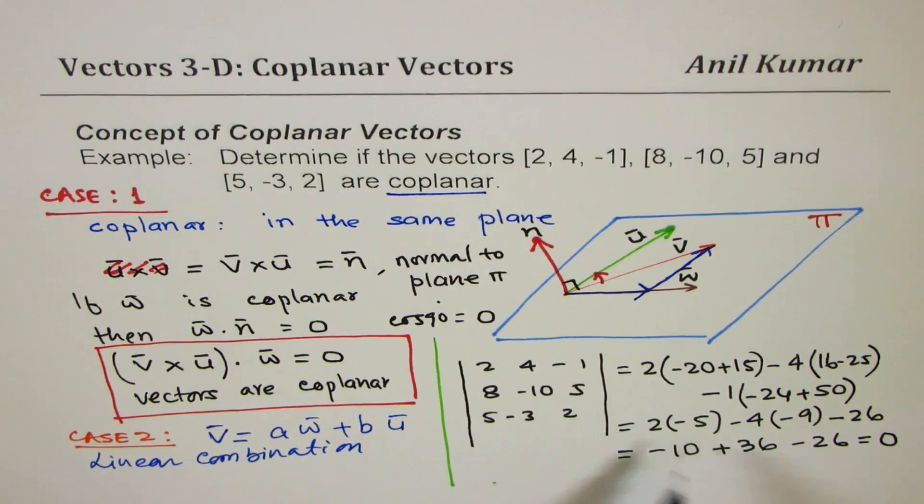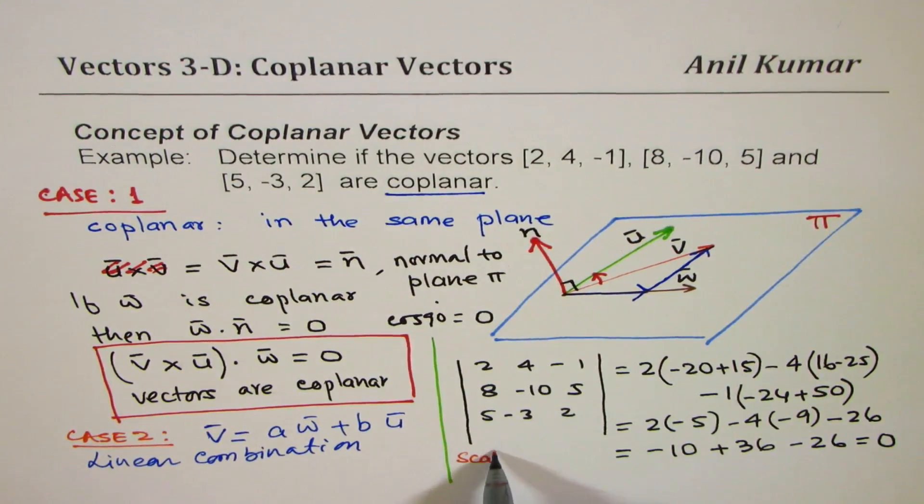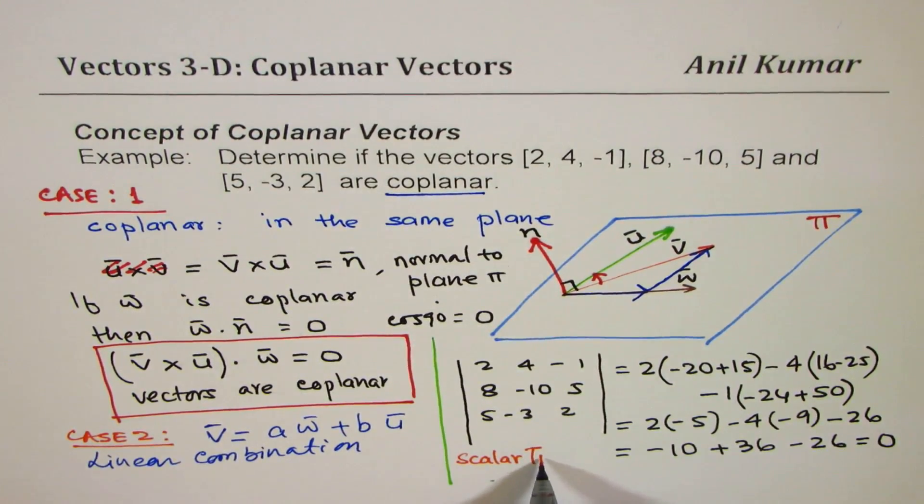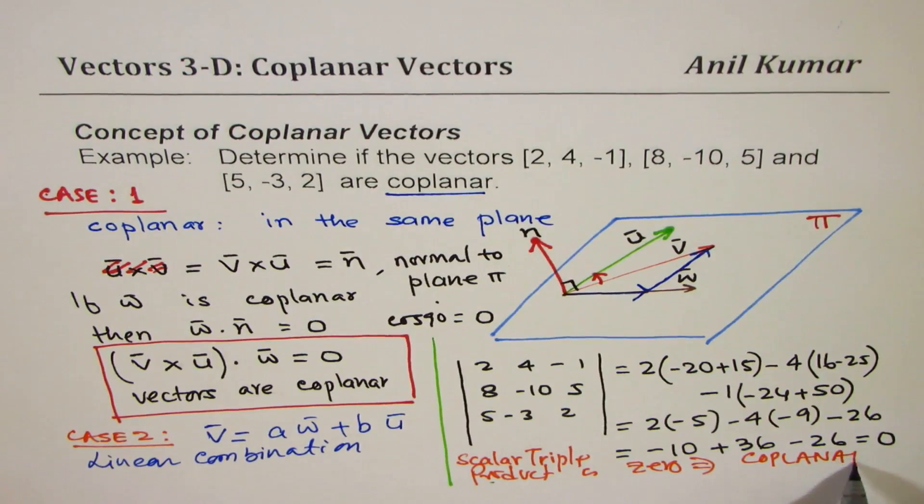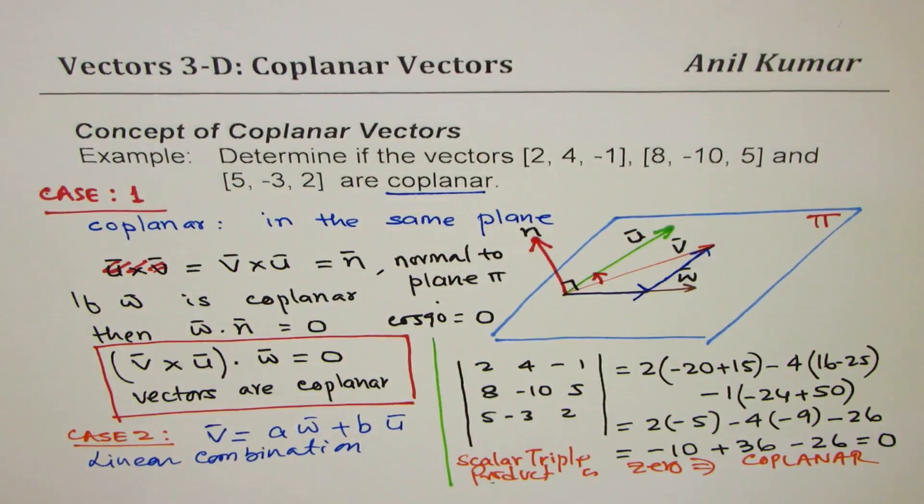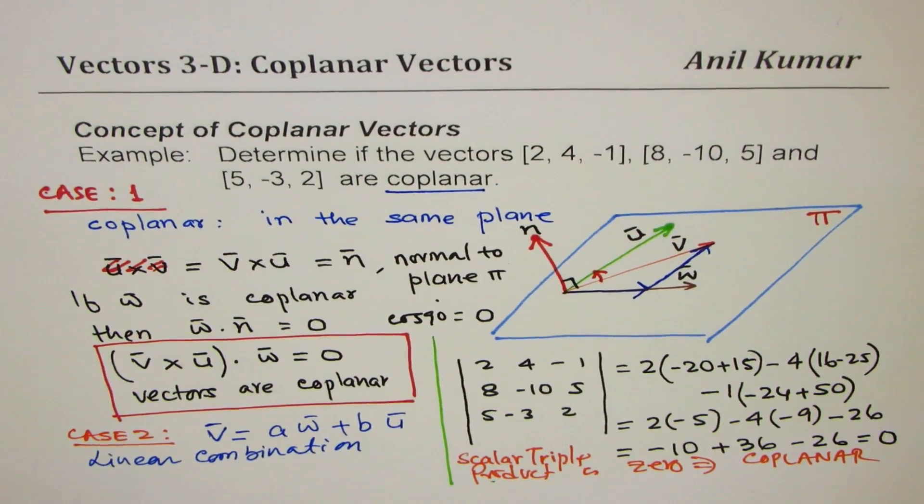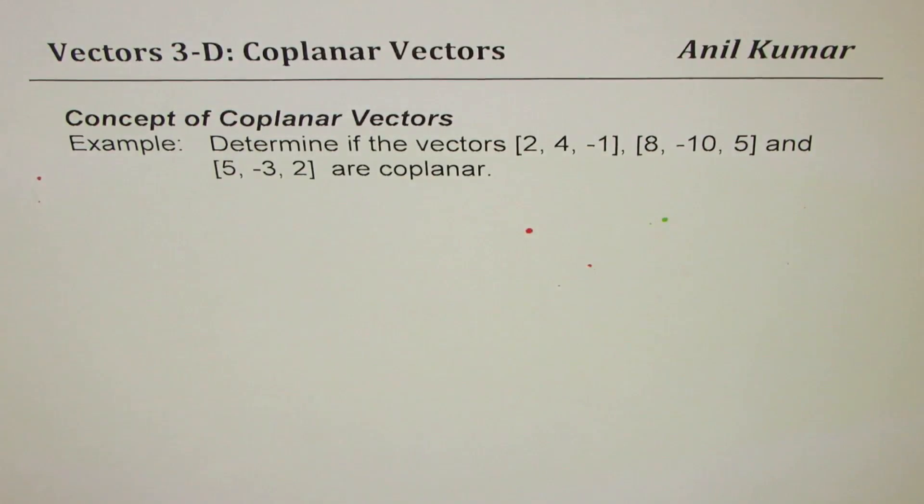Since scalar triple product is 0, we can write that these vectors are coplanar. That means since we got that scalar triple product is 0, they are coplanar. Now, it's a good idea to write one vector as a sum of other two, rather linear combination. So let's look into that part now.